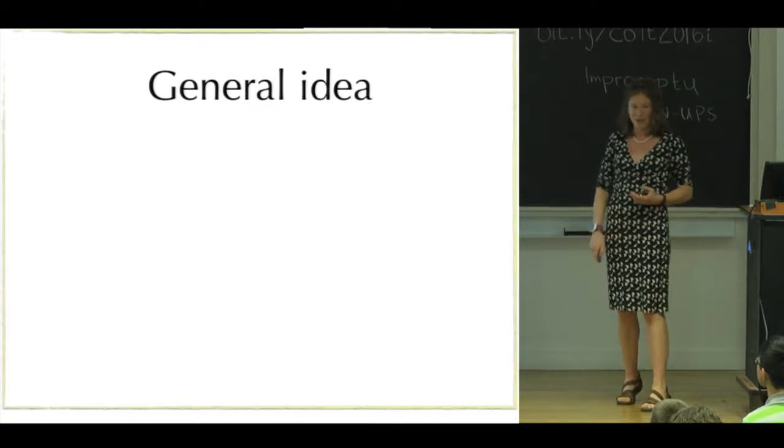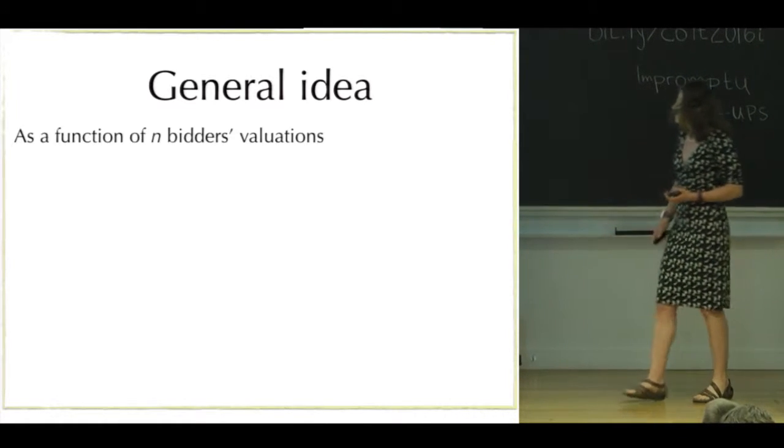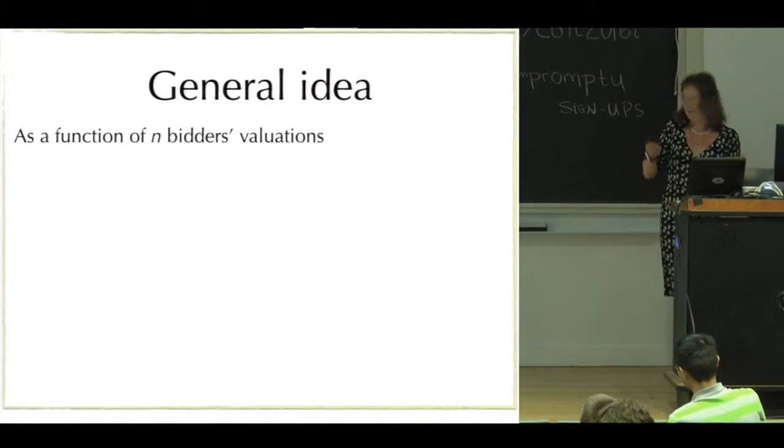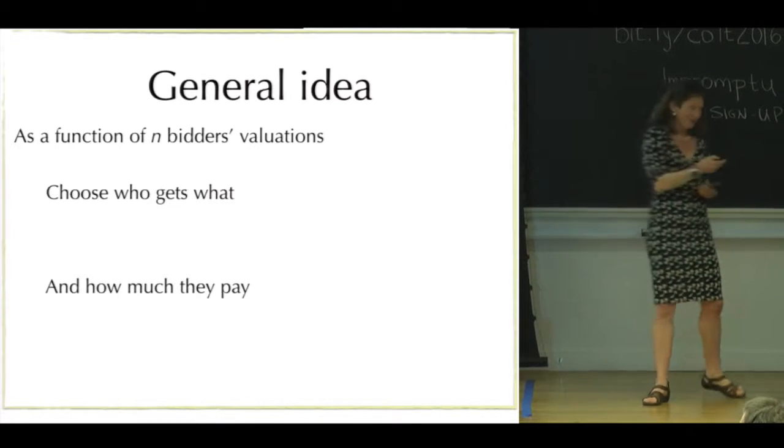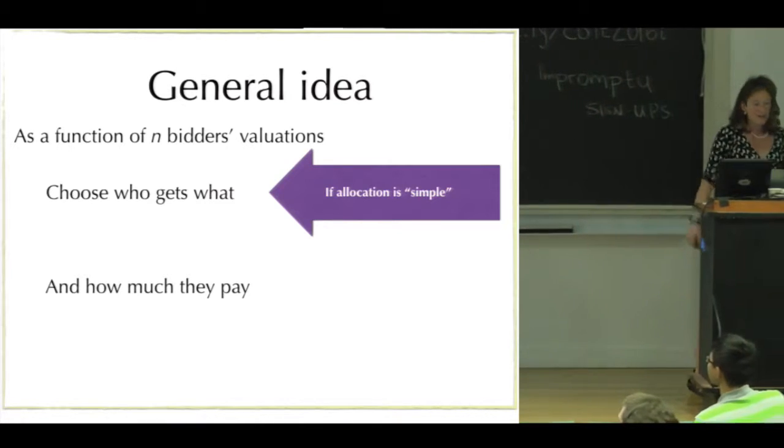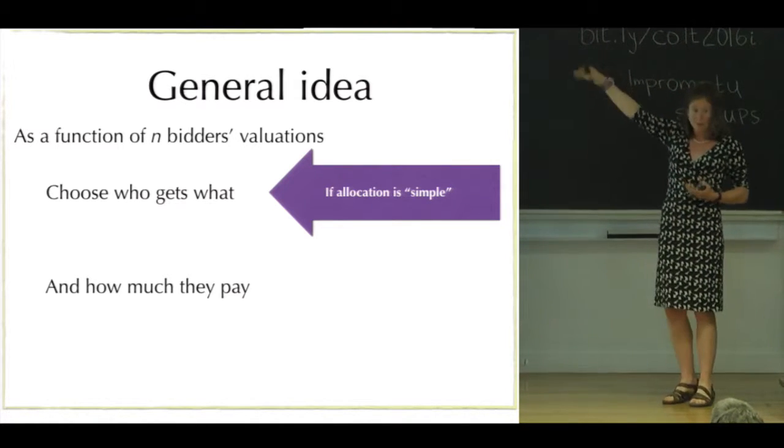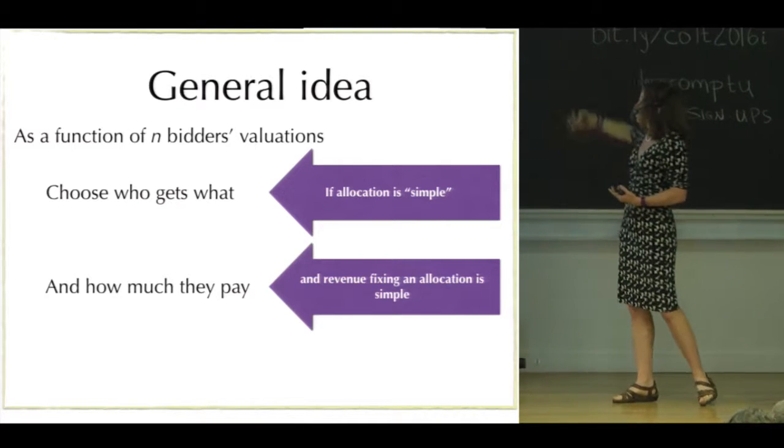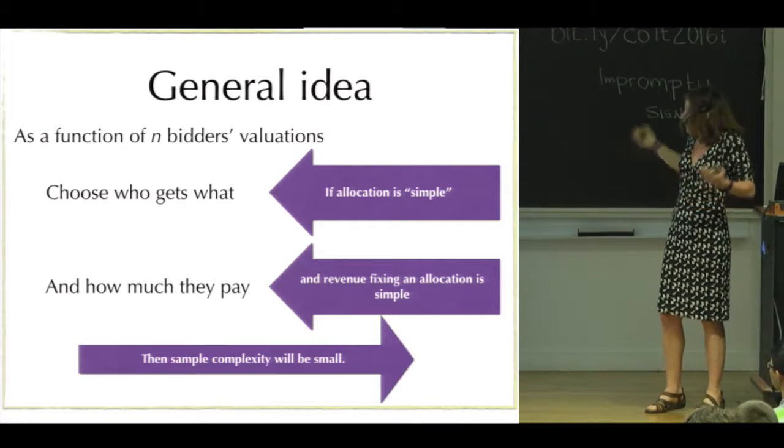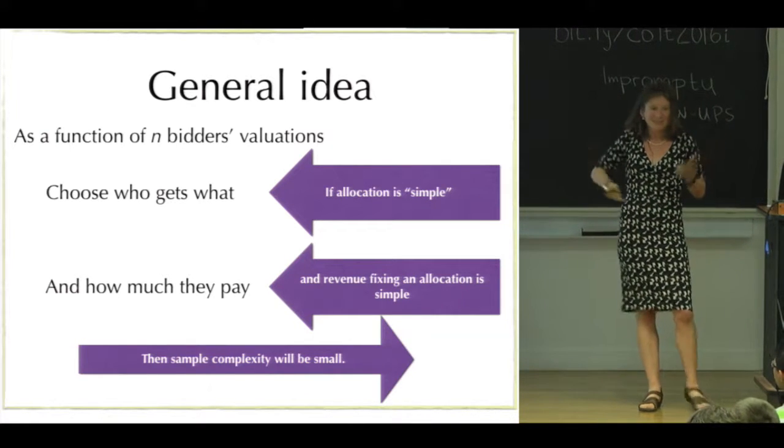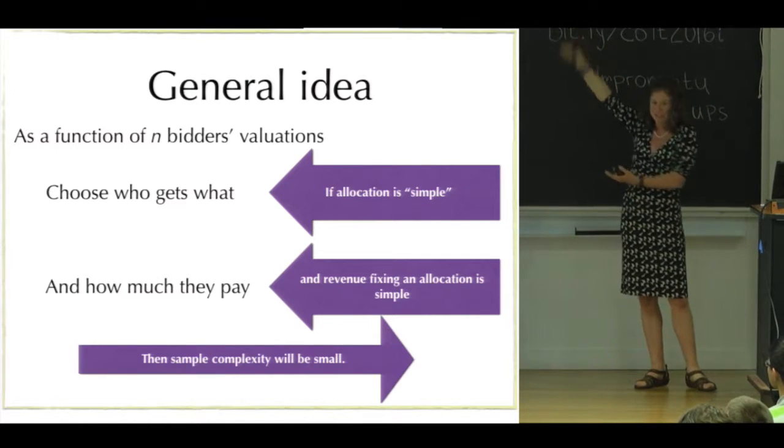Again, I just want to remind you, an auction does this: it chooses who gets what and how much they pay. The informal version of the theorem of the paper is: if the allocation rule is simple, or the set of allocation rules are simple, and once you fix an allocation rule the revenue is a simple function, then you're going to get small sample complexity. This is just like composition—a general thing you could probably prove some formal version of on a napkin.